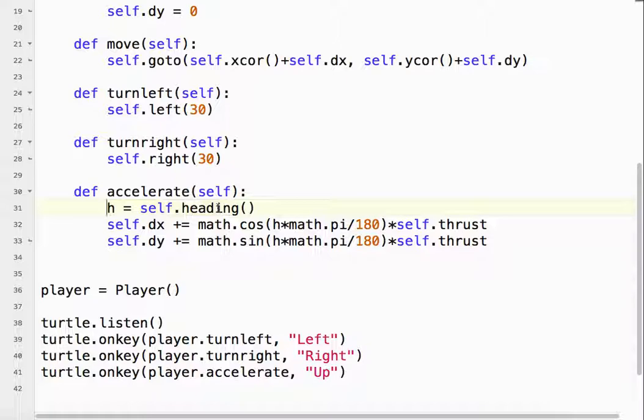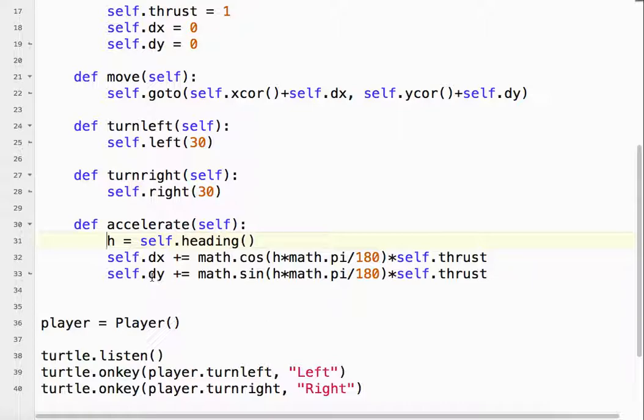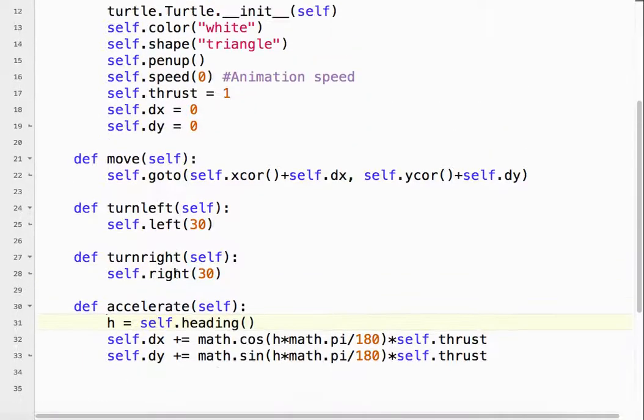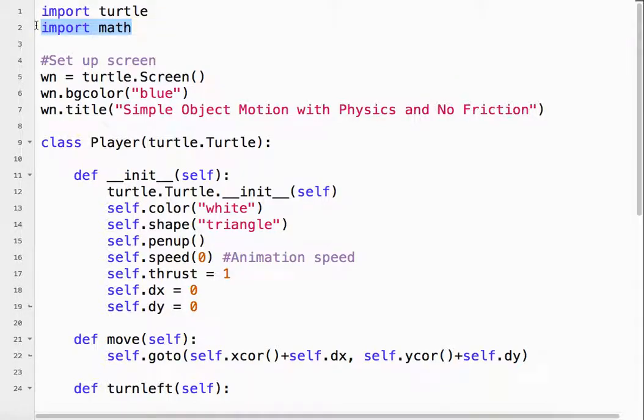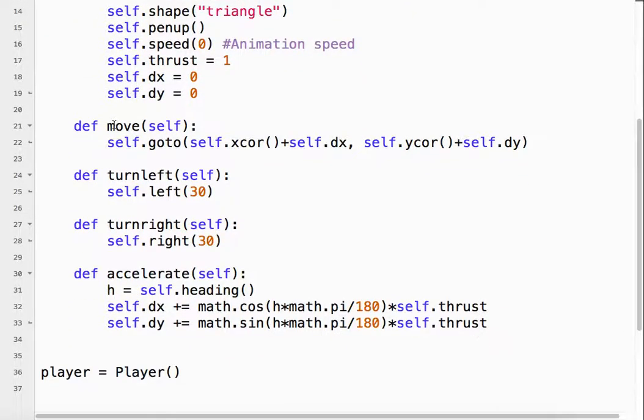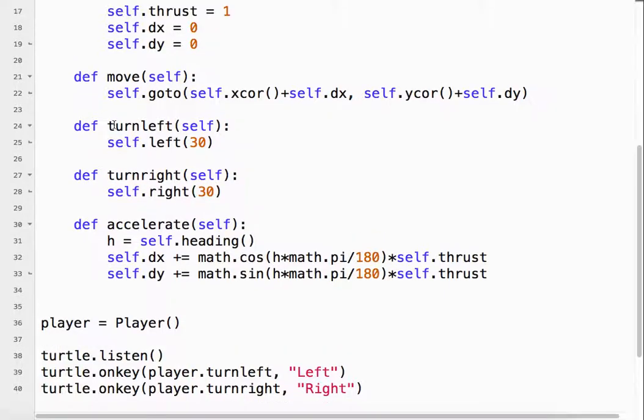These are called polar coordinates. So what we've got to do is the dx, so if we're heading in a certain direction, the dx and dy are calculated using these formulas. So it's cosine, math.cos(h*math.pi/180)*thrust. So how much of our thrust do we want to give to the x and the y, the delta x and delta y. Notice I used math, so I had to import math up here at the top. Very important. So if you get an error, you maybe didn't import math. And that's it.